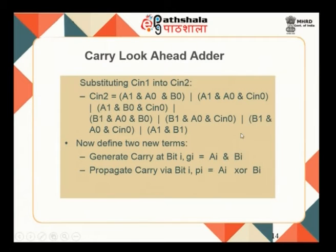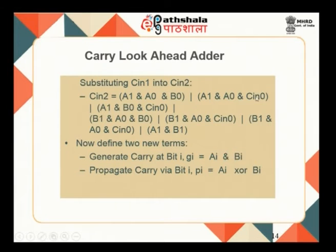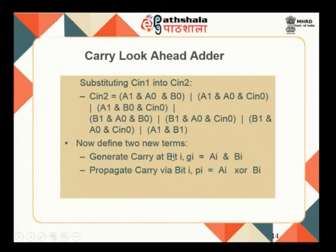The input carry C0 is always available, and all A's and B's are always available. What is not available are the intermediate carries C_in1, C_in2, and so on. If you can replace all intermediate carries and express everything in terms of A, B, and C0, you do not have to wait for previous carries — you can evaluate simultaneously. This is the motivation for carry look-ahead addition, where we define two terms: a generate function Gi = Ai·Bi and a propagate function Pi = Ai XOR Bi.